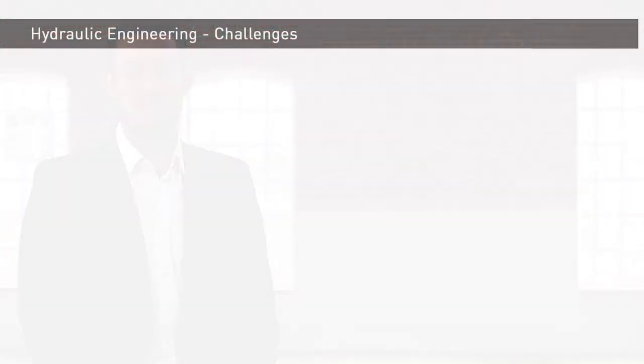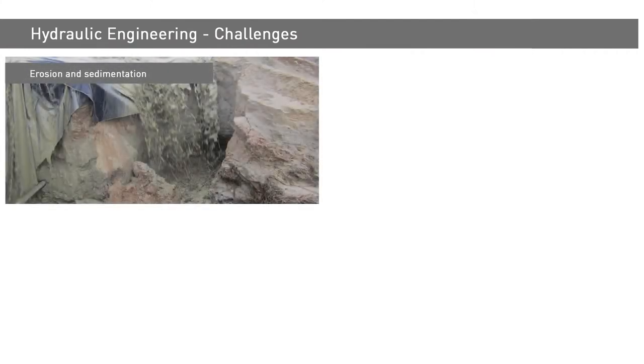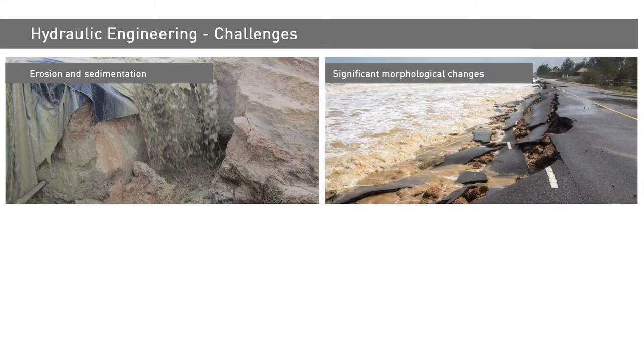The term erosion is used to describe a process in which water comes into direct contact with soil and displaces particles through its movement. Although erosion and its opposite, sedimentation, are natural processes, they can cause serious problems in our ever more anthropogenically shaped environment. Erosion and sedimentation and the associated movement of material can lead to significant morphological changes.